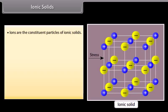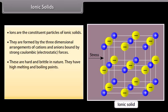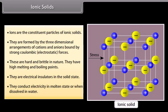Ions are the constituent particles of ionic solids. They are formed by the three-dimensional arrangements of cations and anions bound by strong coulombic electrostatic forces. These are hard and brittle in nature. They have high melting and boiling points. They are electrical insulators in the solid state. They conduct electricity in molten state or when dissolved in water.